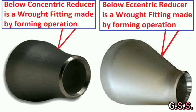This is a picture of butt weld end concentric and eccentric reducers. These are wrought fittings, meaning form fittings having shape and dimensions as per ASME B16.9. This type of wrought fittings are used for all piping systems, including critical and non-critical services.